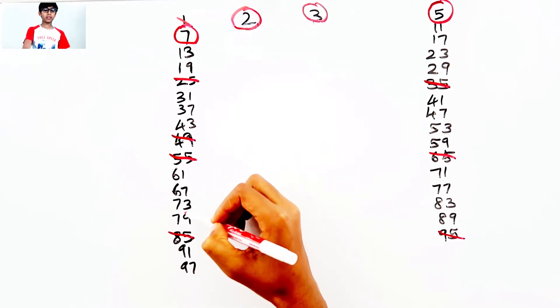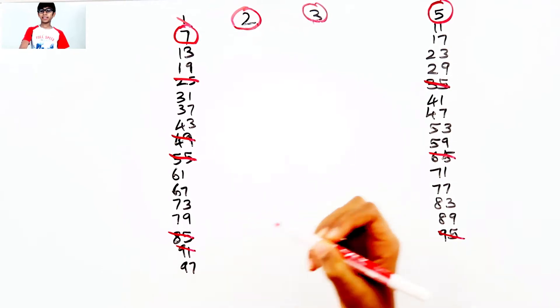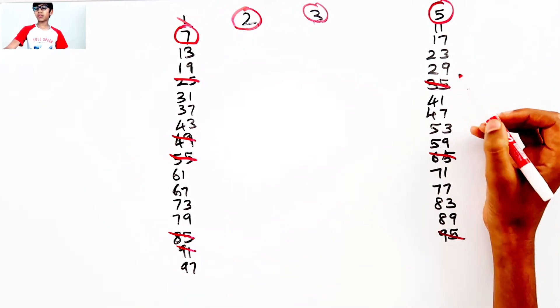Next, 1, 2, 3, 4, 5, 6, 7. 91 can be divided by 7. Next I need to start from 35.